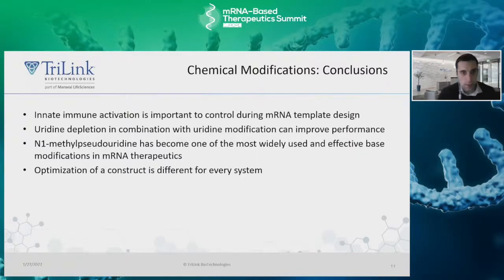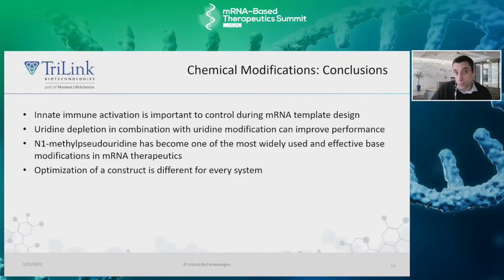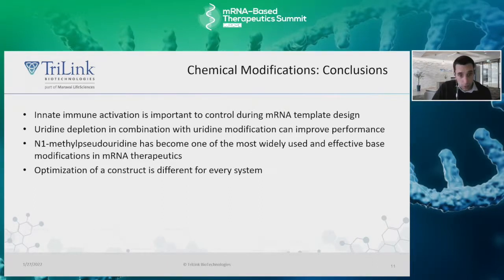As a quick summary, here are the main takeaways when thinking about using modified bases for your mRNA production. Chemical modifications are a simple way to design your mRNA to help mitigate innate immune activity. Uridine content has been shown to cause immune activation, so codon-optimizing your sequence for uridine depletion is also a great way to aid in immune suppression. Importantly, different cell lines or systems may require different optimization techniques to address the immune response.